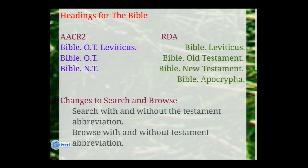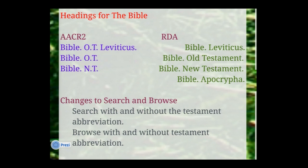The easiest way to optimize search is to search with and without the Testament abbreviation while we're still in the hybrid environment. It may seem frustrating to search two terms instead of one, but it's part of building the foundation so things improve going forward. There are also abbreviations that won't exist anymore in LC subject headings. From music subject headings: 'arr.' will be spelled out as 'arranged,' 'unaccompanied' will be spelled out, 'Dept.' will be spelled out as 'department' — that's a retroactive change, though it depends on resources. The easiest thing is to search both terms or use a truncated search.